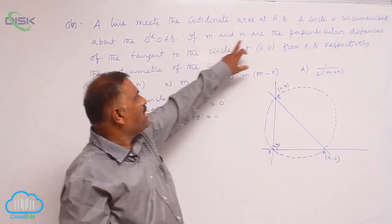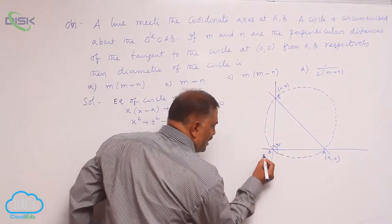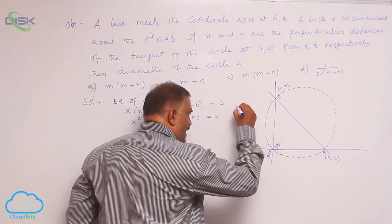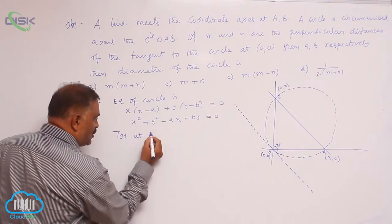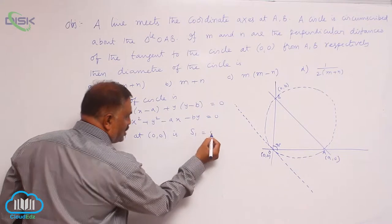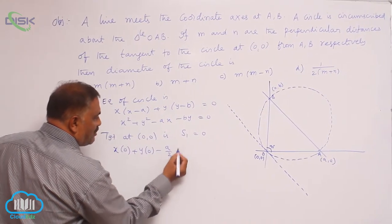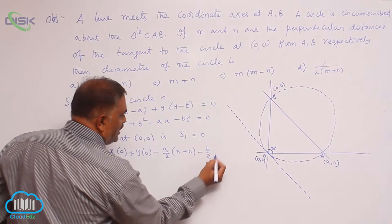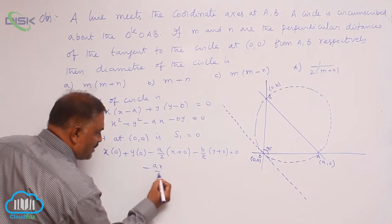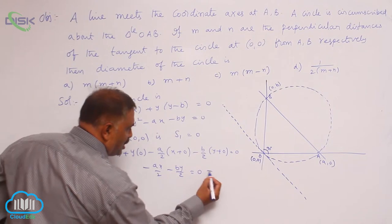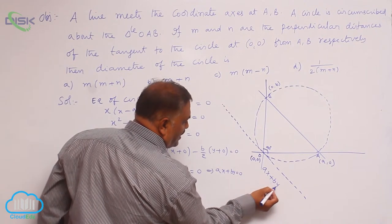M and N are the perpendicular distances of the tangent to the circle at (0,0). At this particular point (0,0), let us draw a tangent. The tangent at (0,0) using S1 equals 0 gives: x(0) plus y(0) minus A/2 times x minus B/2 times y equals 0, which simplifies to Ax plus By equals 0. So the tangent line is Ax plus By equals 0.